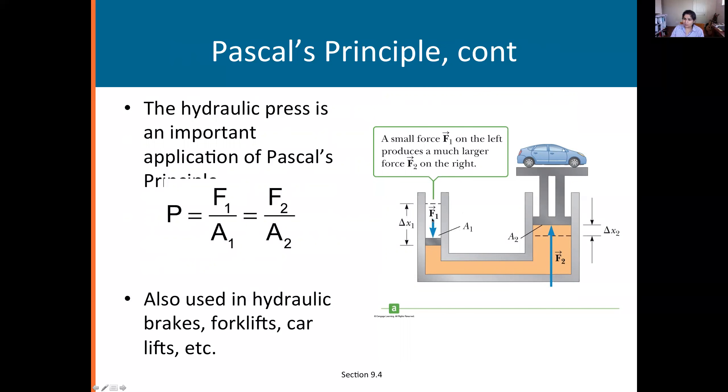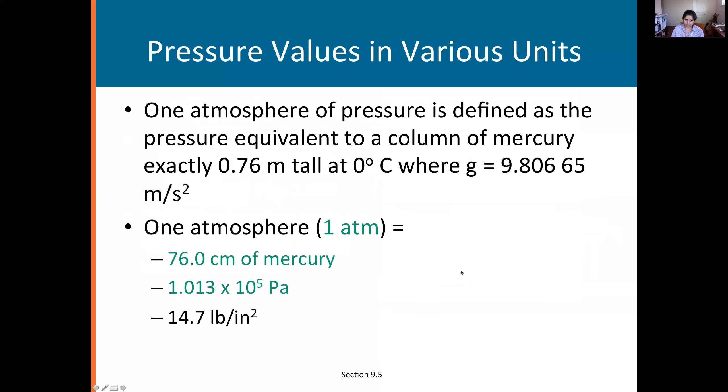You might be given pressure in several different units. One atmosphere pressure may be given as 1 atm, which is 76 centimeters of mercury or 760 millimeters of mercury, the height of the column of mercury, same as 1.013 times 10 to the 5 Pascals, same as 14.7 pounds per square inch.